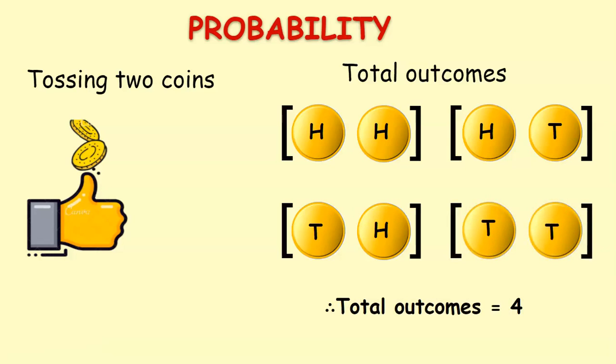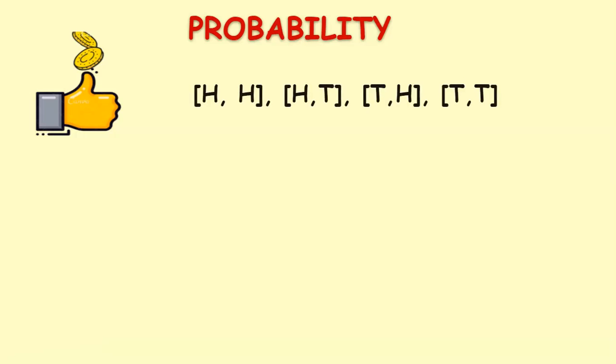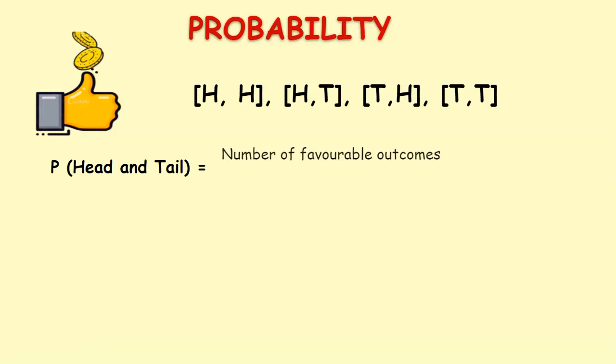Now let us see some examples on probability of tossing two coins. As we know the total outcomes are four. Let us see the probability of getting head on one coin and tail on the other. We know the probability is number of favorable outcomes by total number of possible outcomes.